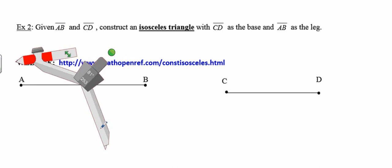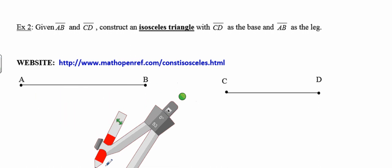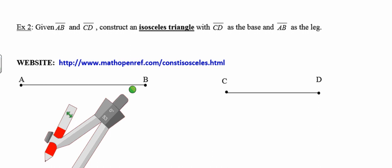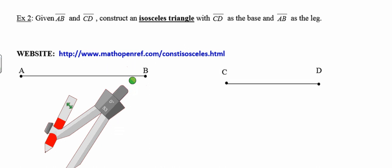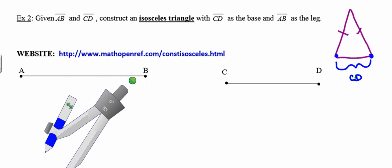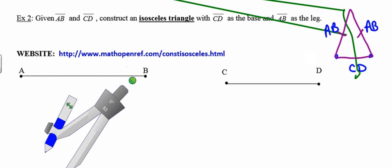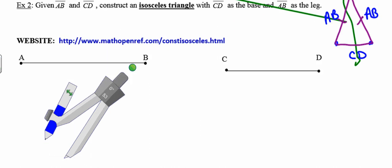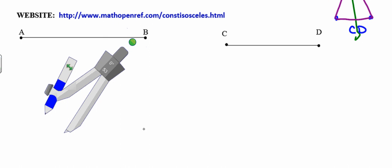Next, instead of an equilateral triangle, we'll construct an isosceles triangle. Line segment CD will be the base, and the two legs will each have a length equal to line segment AB. It helps to draw a sketch first: the base equals CD and each leg equals AB. That's the road map for this construction. I'll start by constructing the base with length equal to CD.